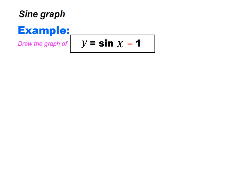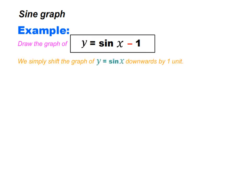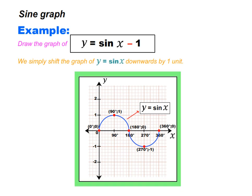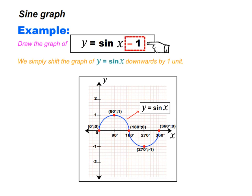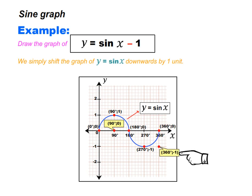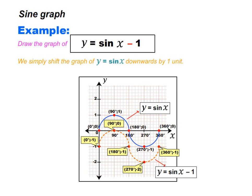Let us have a look at this example. We want to draw the graph of y is equal to sin x minus 1. To draw it, we simply shift the graph of y is equal to sin x downwards by 1 unit. Each y value in our coordinates will be subtracted by 1. The point 90 degrees and 1 will become 90 degrees and 0. 360 degrees and 0 will become 360 degrees and minus 1. Let us join the dots to get the graph of y is equal to sin x minus 1.